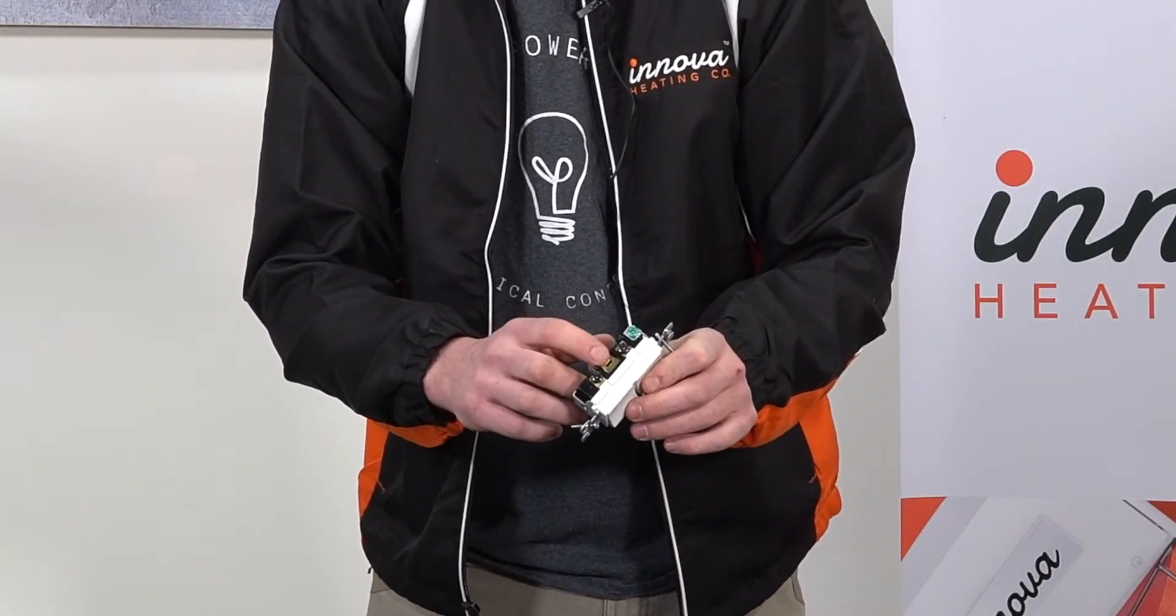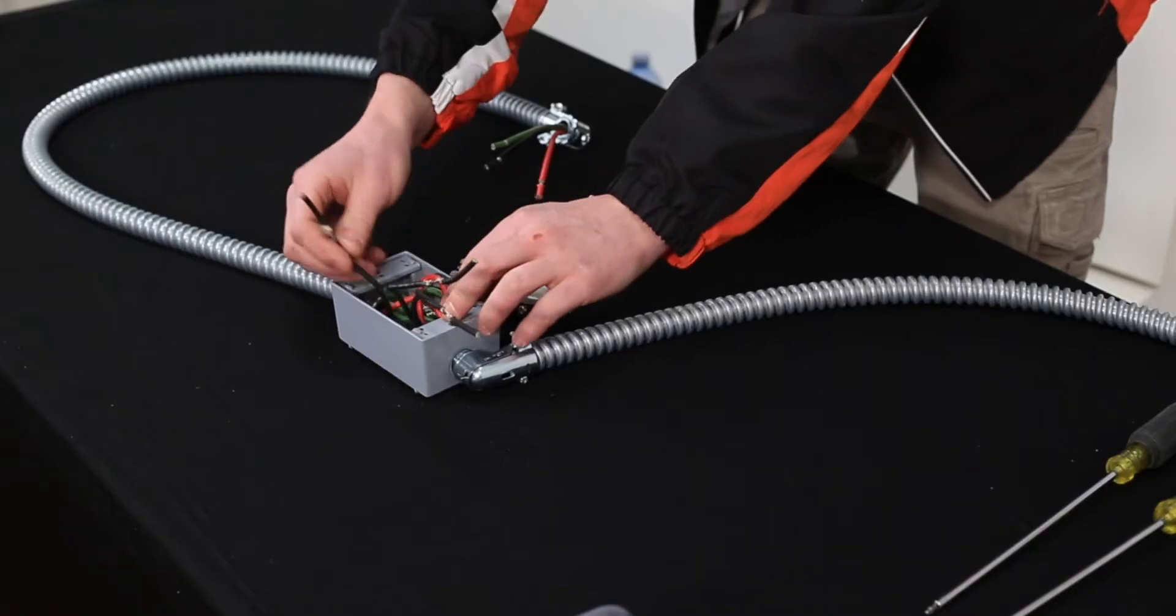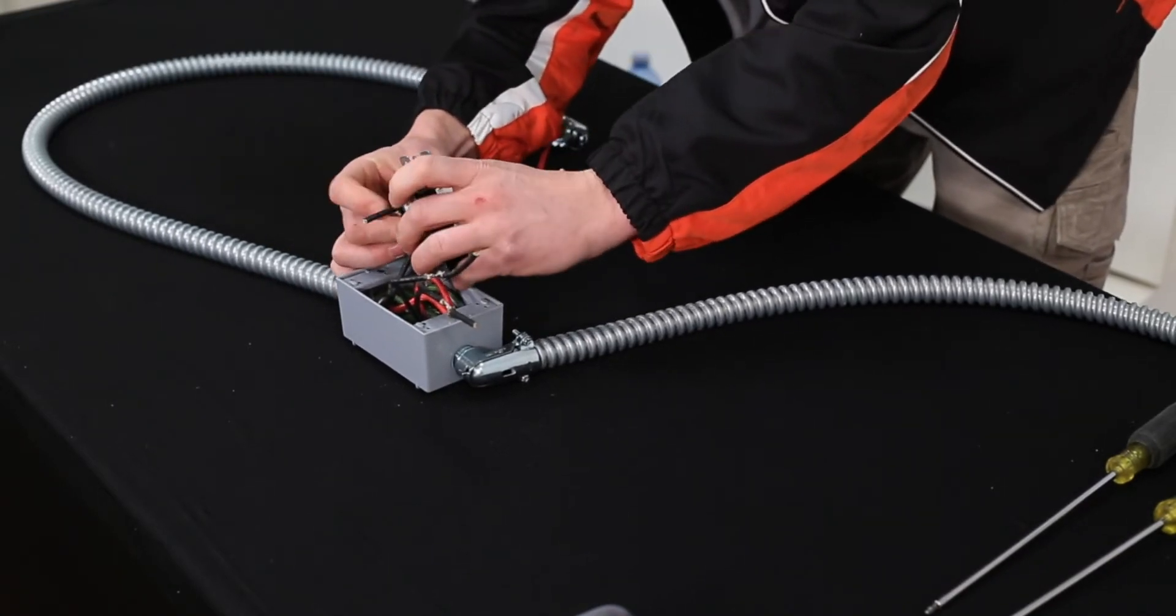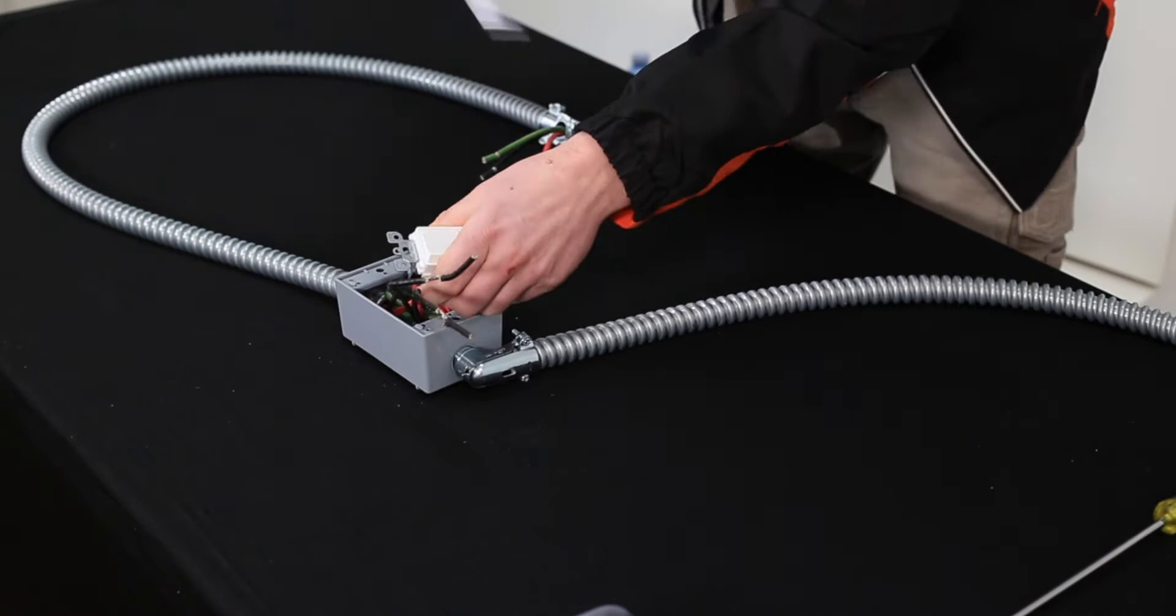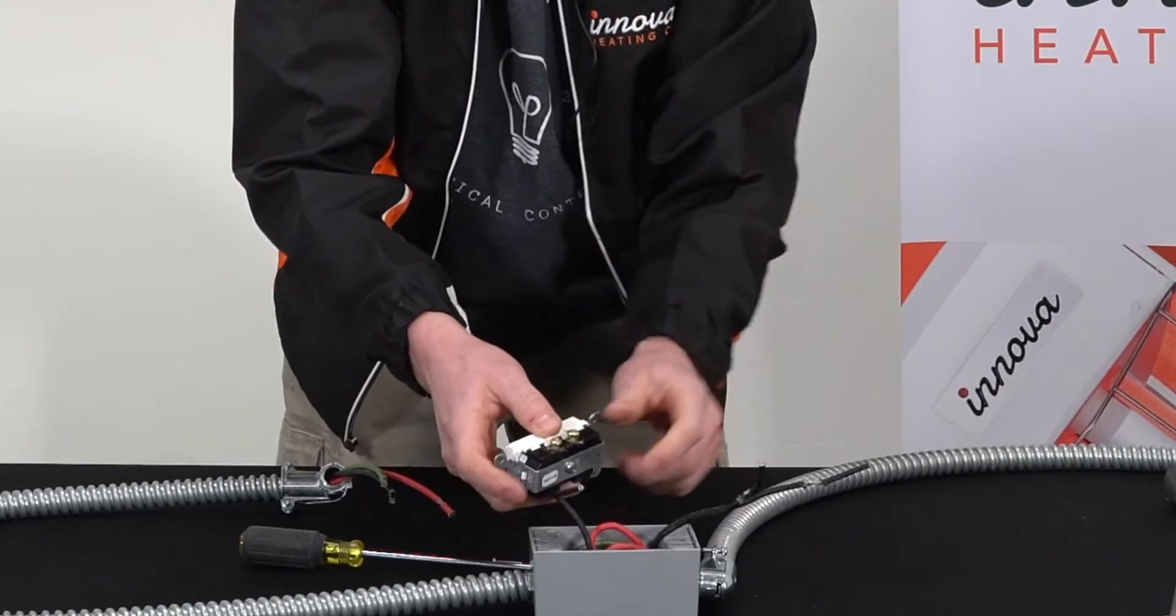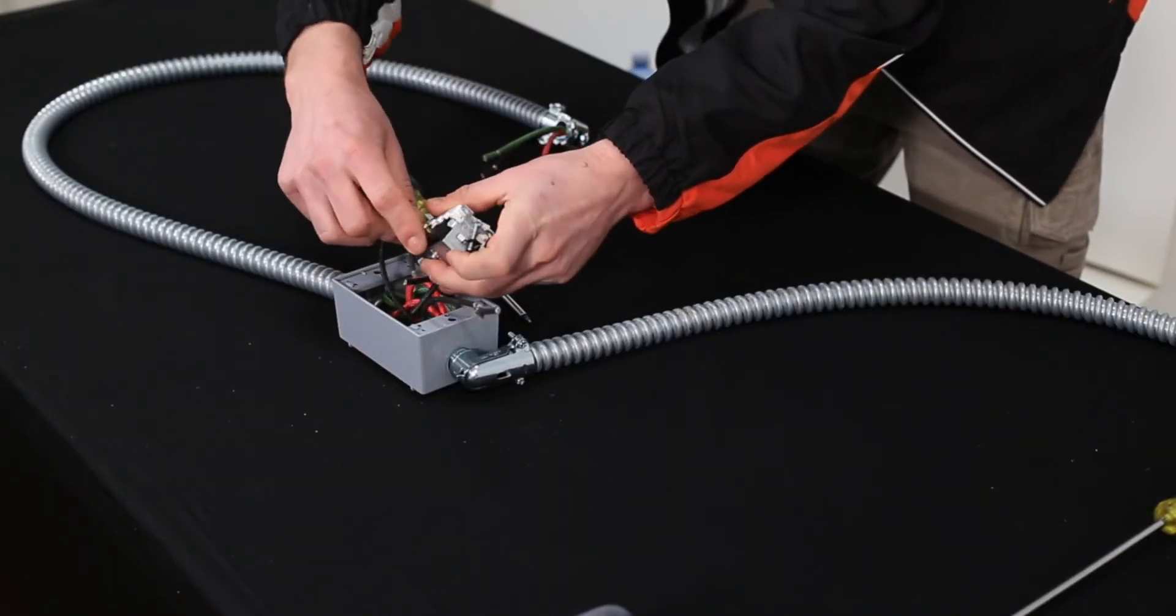This line side is going to get attached to the black wire, and the two load black wires here are going to get attached to one of the gold screws. The last load wire is going to get attached to the other gold screw.